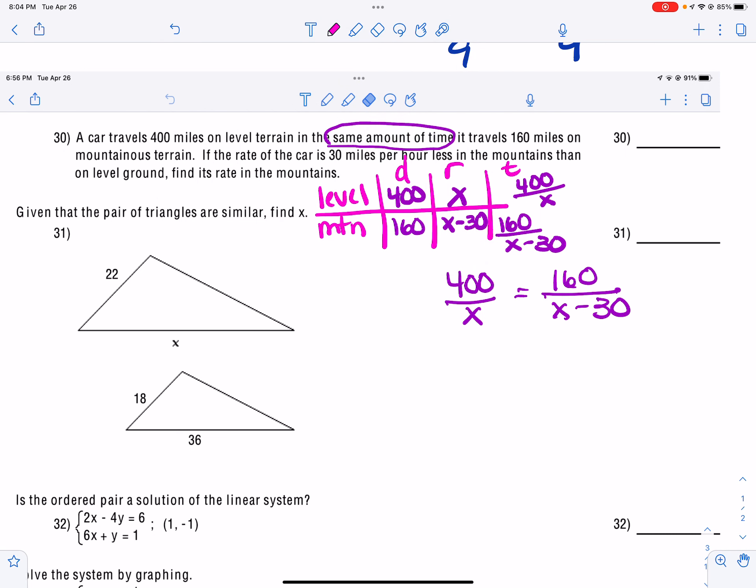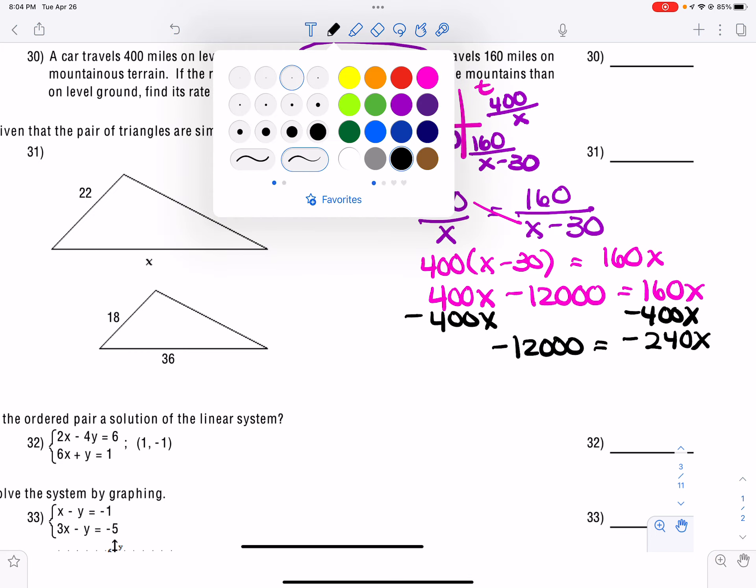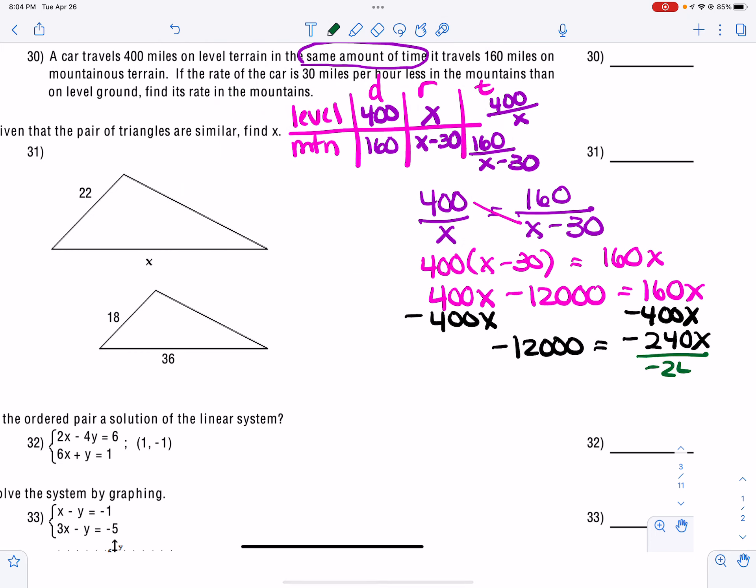And so I get this. Now, because it says it takes in the same amount of time, then we're going to set those two equal to each other. So we're going to take 400 over X is equal to 160 over X minus 30. And now we have a proportion that we can cross multiply. So I'm going to take 400 times X minus 30 and then 160 times X. So distributing, I get 400X minus 12,000 equals 160X. I am going to subtract 400X, which then gives me negative 12,000 is equal to negative 240X. And then I will divide by negative 240.